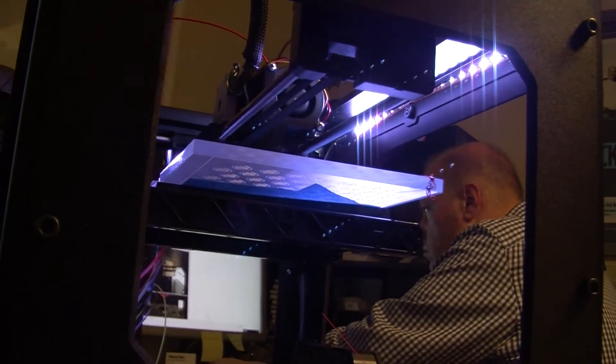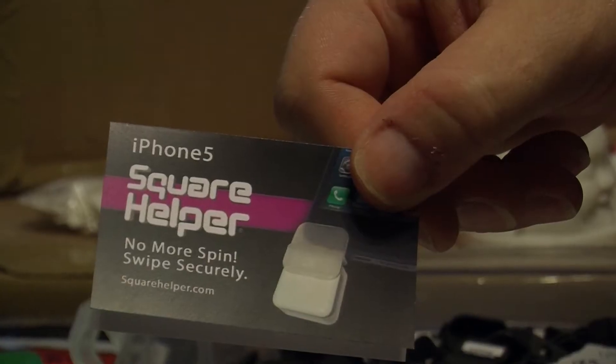My name is Chris Milnes, and I'm the inventor and owner of a thing called the Square Helper. I use MakerBots to print them and get them ready to retail.